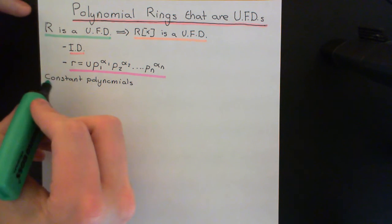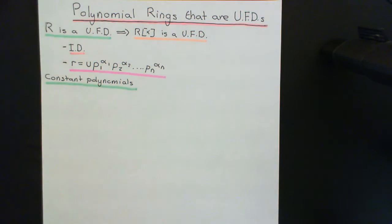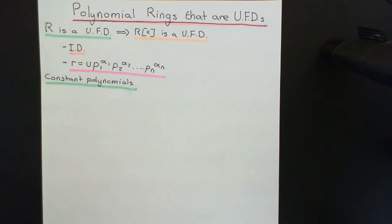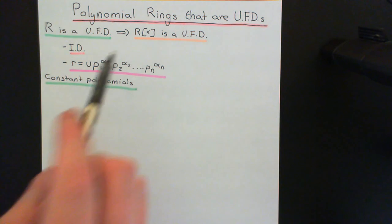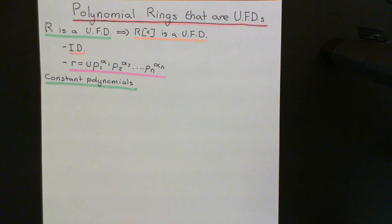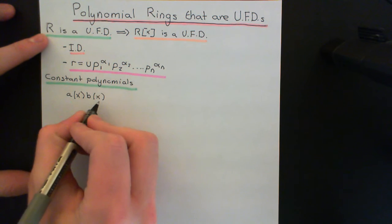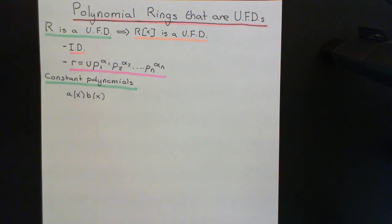Let's start with constant polynomials and show that they have a factorization and that it's unique. The brilliance here is that the constant polynomials is just this initial ring sitting inside of here — adding on all the non-constant polynomials has absolutely no effect on them. Whenever you multiply two elements of this ring of polynomials together — A of X and B of X — the degree of the product is always going to be the degree of A of X plus the degree of B of X.